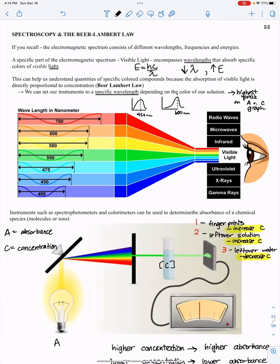Alright, hey AP Chemists. This is the Unit 3 Lecture, Part 15, the last lecture. I'll try and keep this short. This is Spectroscopy and the Beer-Lambert Law.